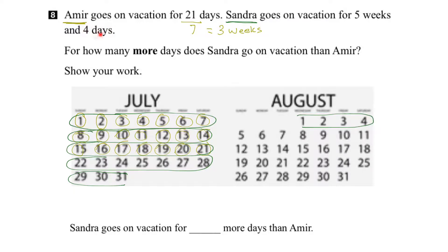Then she has 4 extra days, so we can circle those: 1, 2, 3, 4. To recap: Amir starts his vacation on July the 1st, goes for 21 days, and ends on July 21st. Sandra, on the other hand, starts her vacation July 1st, goes for 5 weeks and 4 extra days, and ends her vacation on August the 8th.